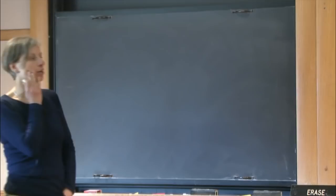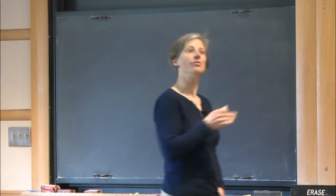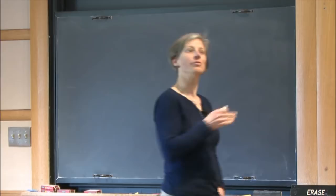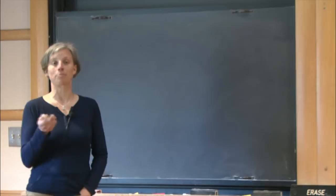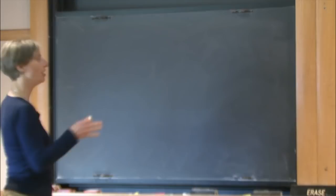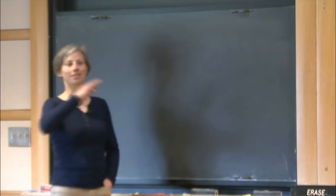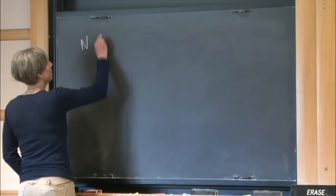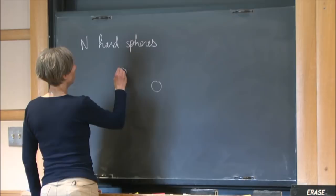I like this system very much — not because I'm a great billiard player (I'm actually very bad) — but because the system is apparently very simple. There are no quantum effects, no relativistic effects. The system consists of N spheres moving in dimension d, and I'll denote their radius by epsilon.